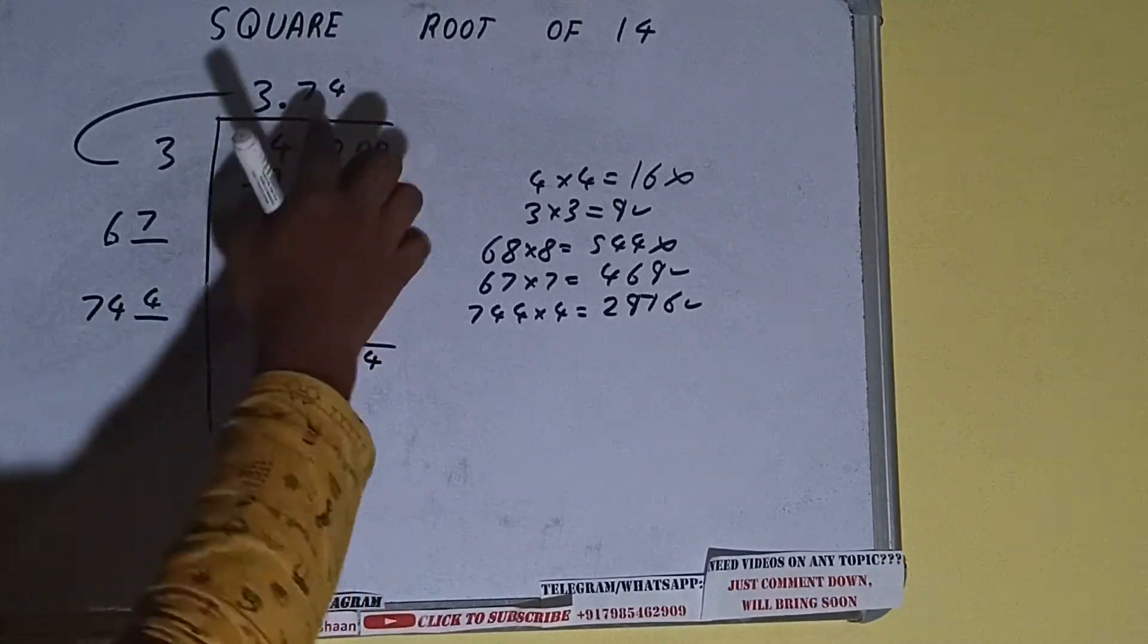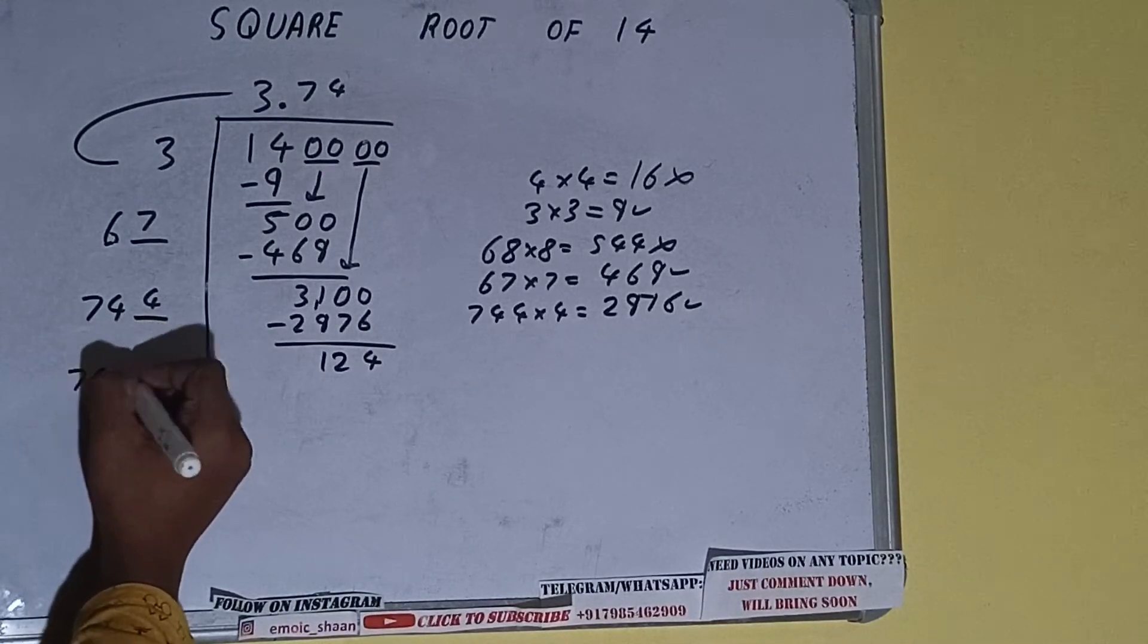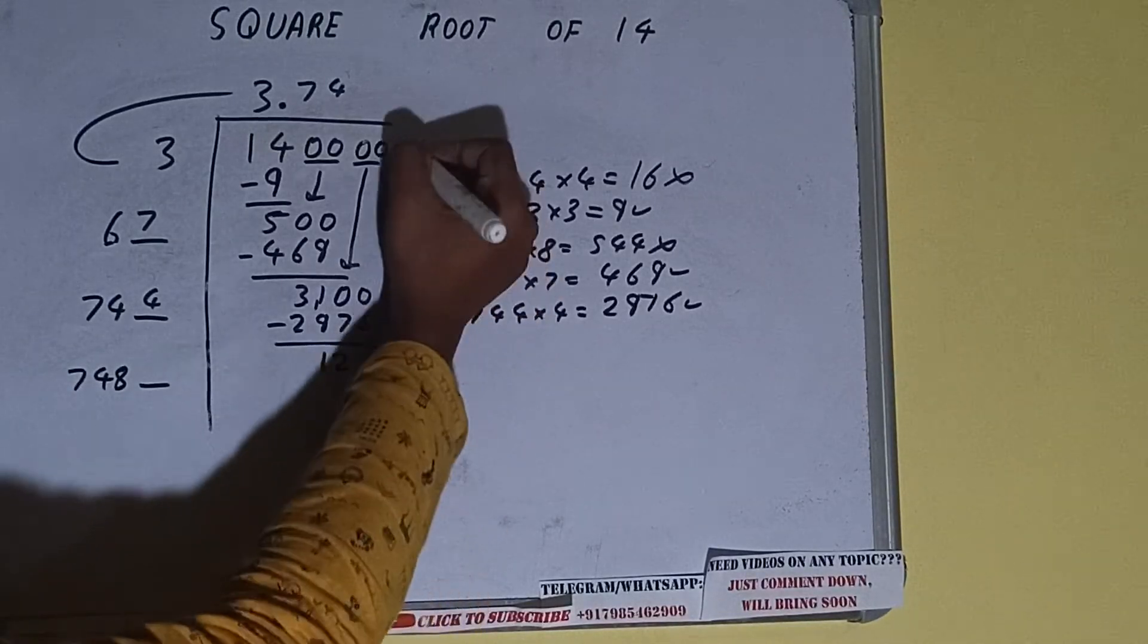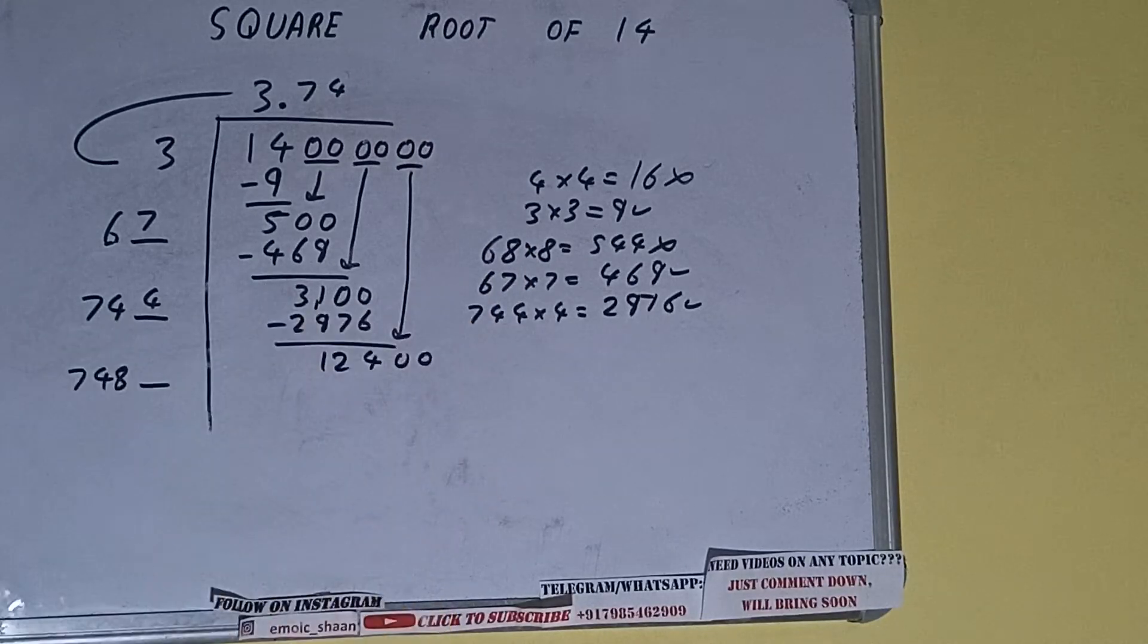744 into 4 we did, so add both. So 744 plus 4 will be 748 and one digit extra. So this number we need to make it big. So bring the next pair of zeros down, and it will become 12400.